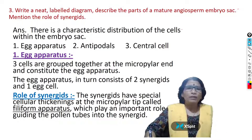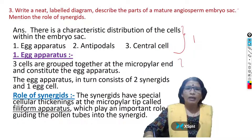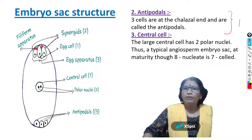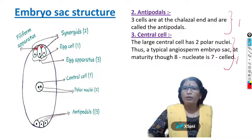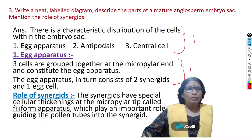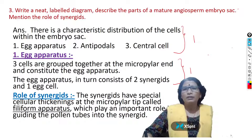I will explain how the marks are distributed. You write about the introduction points and you will get one mark. About the egg apparatus, you will get one mark. Role of synergids, one mark. About antipodals, one mark. About the central cell, one mark. The diagram and labeling will account for the remaining marks. By writing this answer clearly, you will get eight marks compulsory.